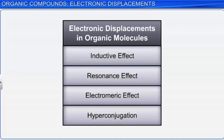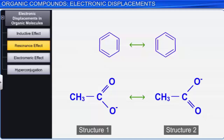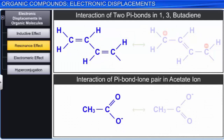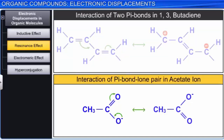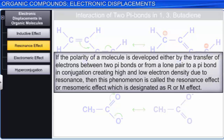Let's learn about another important electronic effect called the resonance effect. Resonance refers to the phenomenon where two or more structures can be written for a molecule or an ion. Because of resonance, the electronic charge spreads over the entire molecule and affects its polarity. If polarity is developed by the transfer of electrons between two pi bonds or from a lone pair to a pi bond in conjugation, this phenomenon is called the resonance effect or mesomeric effect, designated as R or M effect.